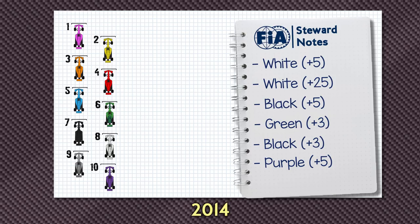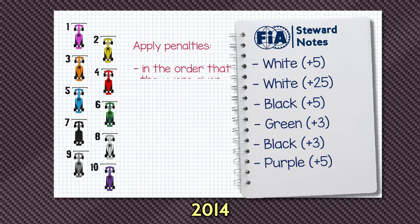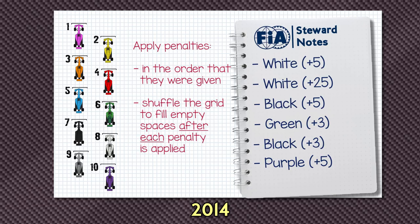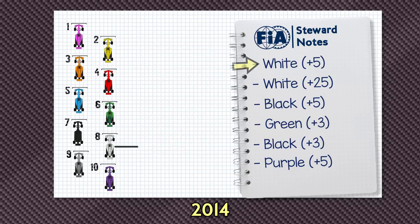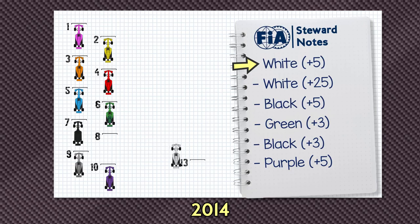Let's go back to 2014. In 2014, this is how the penalties would have been applied. You have to apply the penalty in the order they were received and shuffle everyone forward to fill the gaps after you apply each penalty. So how does that look? White gets a 5-place penalty, meaning they move to 13th position and everyone shuffles to fill the gap. There's only 10 places on the grid, so white shuffles back up to 10th.